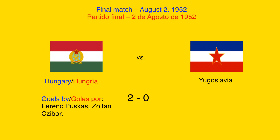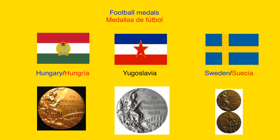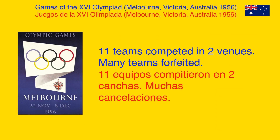In the final match, Hungary beat Yugoslavia 2-0. The football medals given at the 1952 Summer Olympic Games were the golden medal for Hungary, the silver medal for Yugoslavia, and the bronze medal for Sweden.